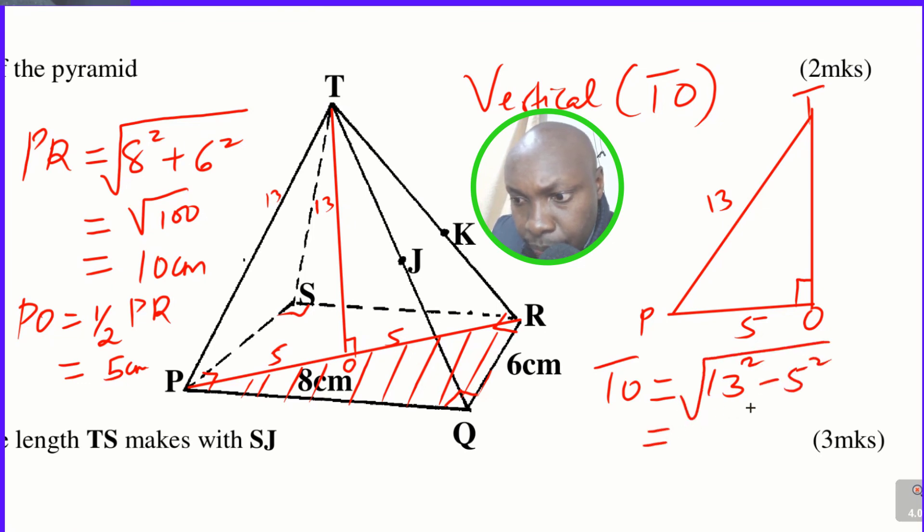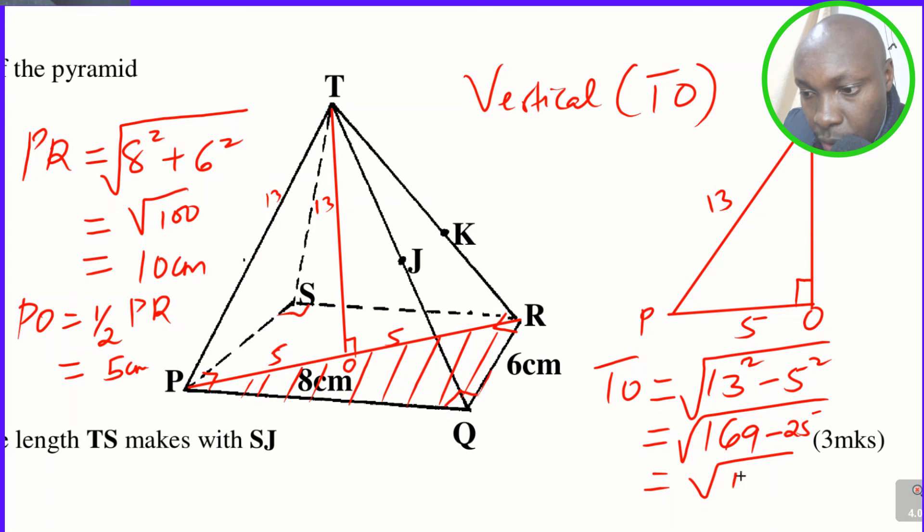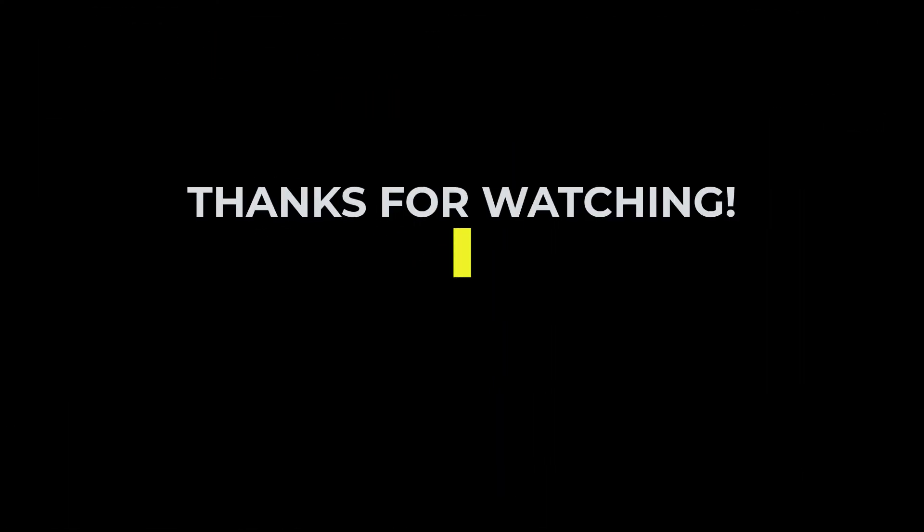And this one will give 169, that is 13 squared, subtract 25. And this will give the square root of 169 subtract 25, this will give 144. Getting the square root of this, you get 12 centimeters. Therefore, the vertical height of that pyramid is 12 centimeters.